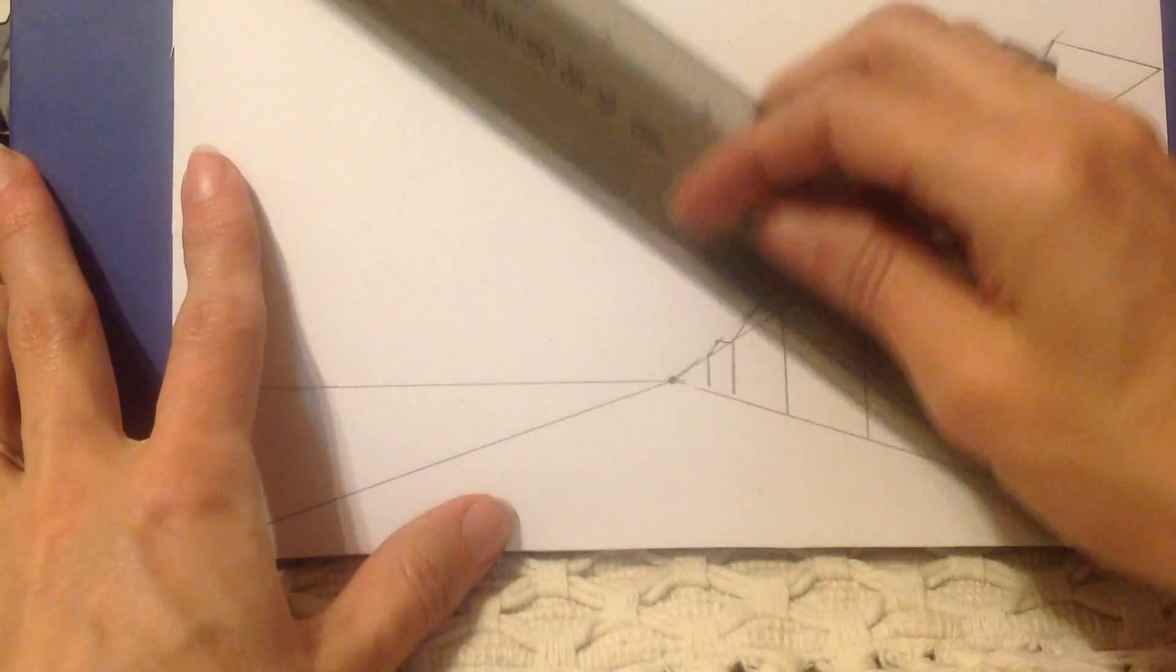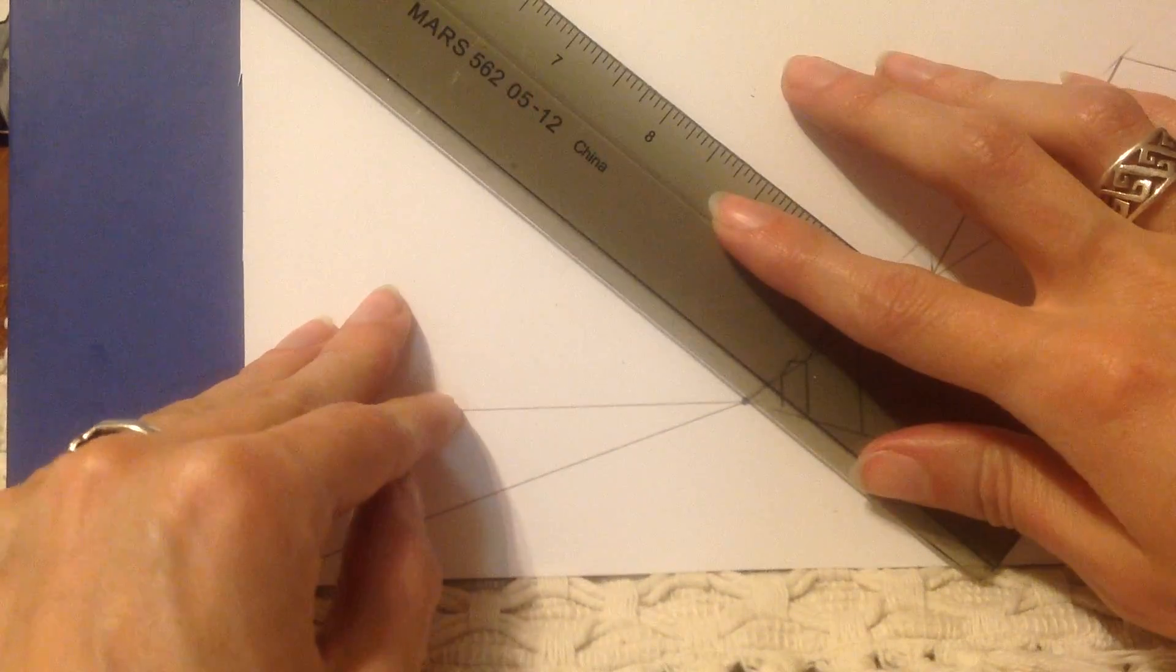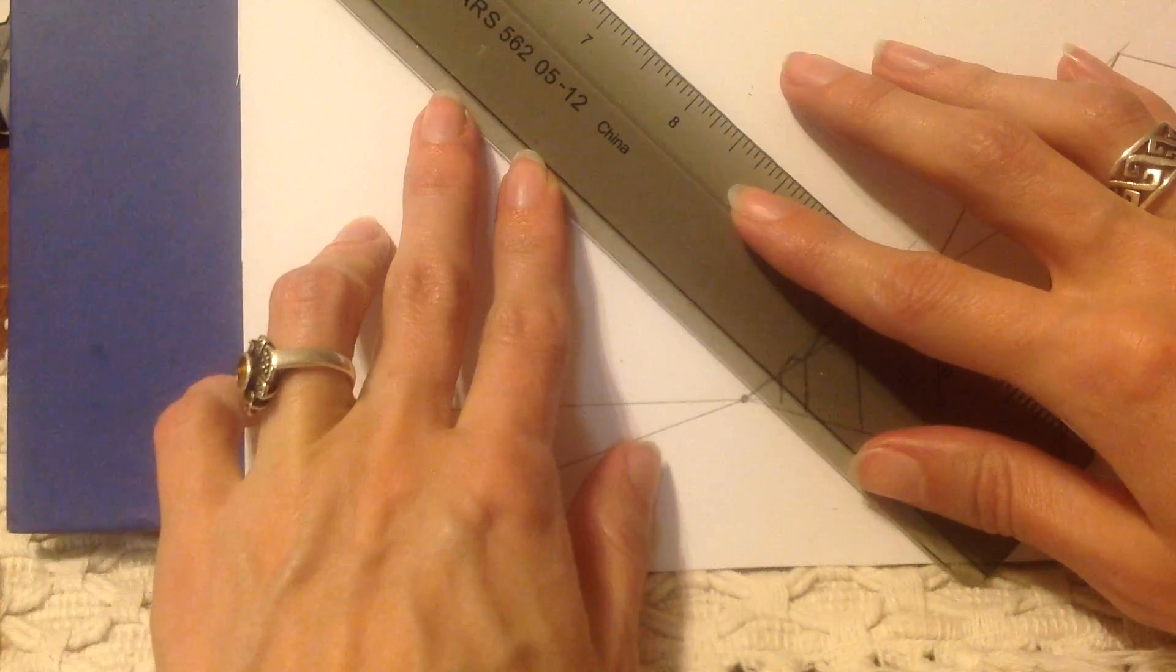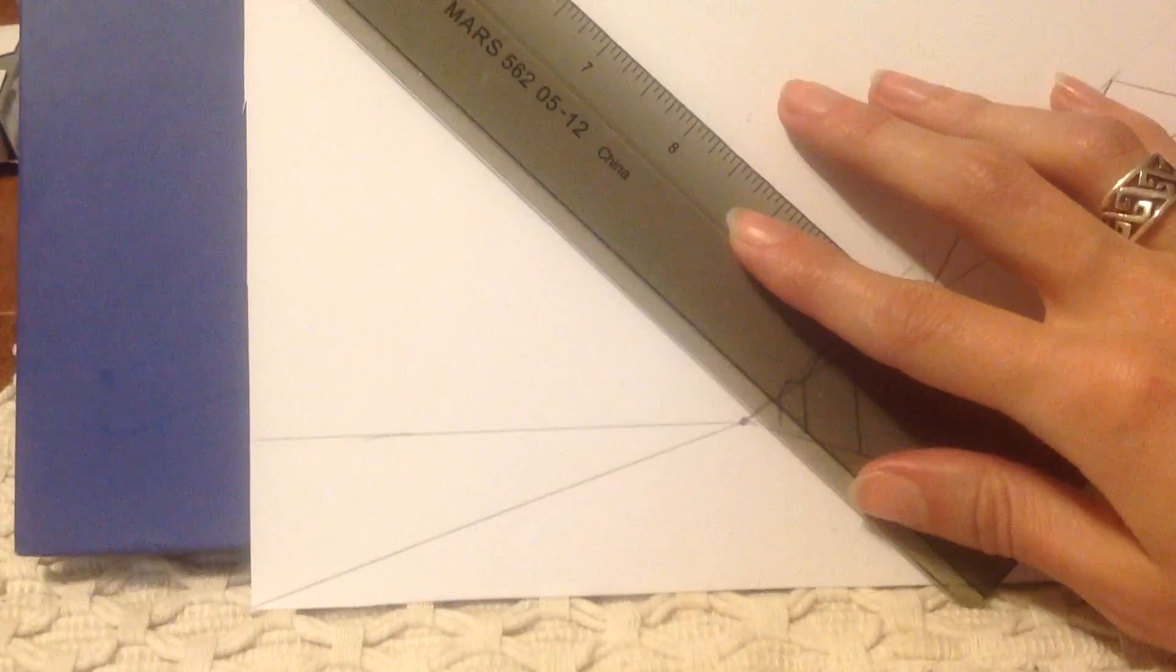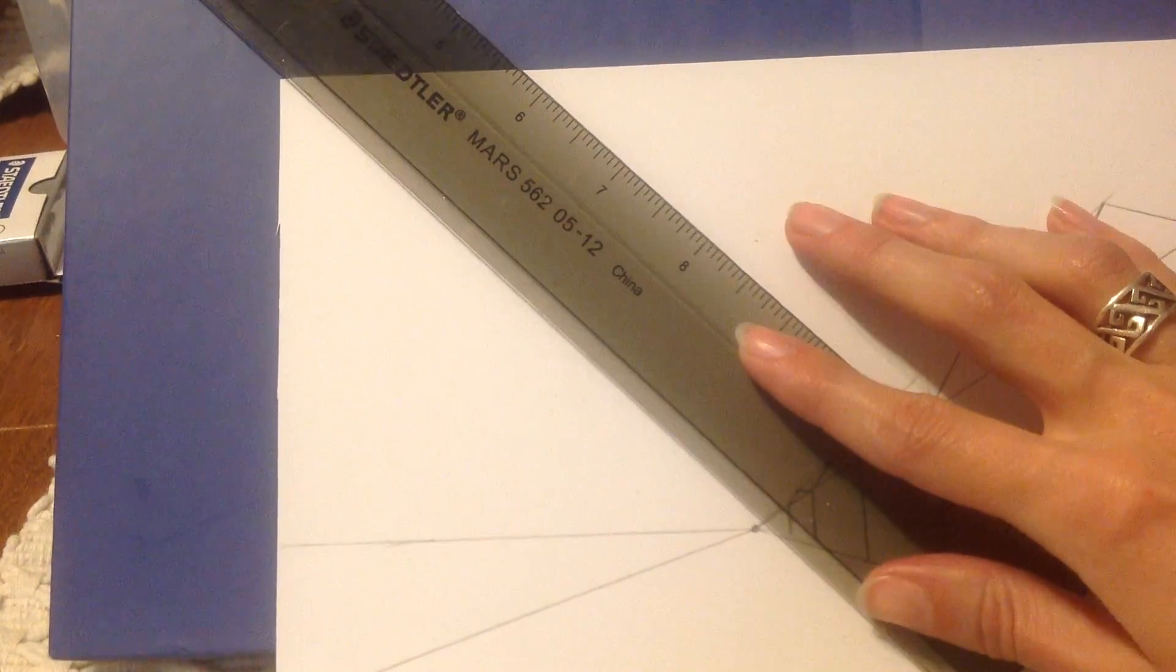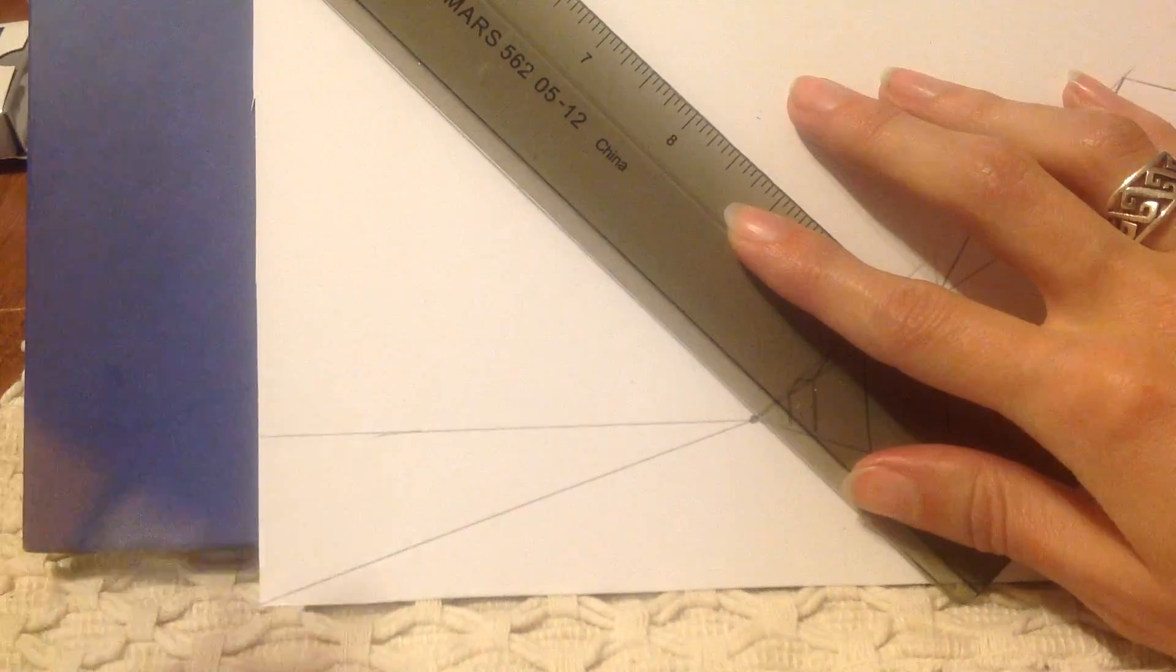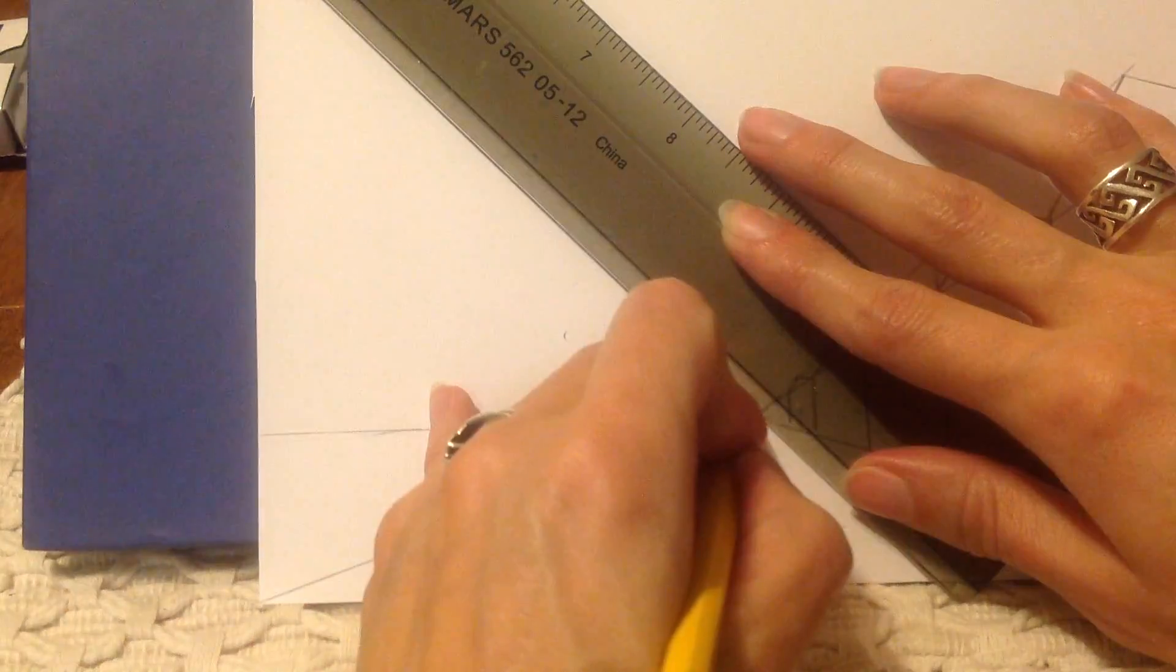I take my ruler, match it up with my vanishing point, and make that angle go way up, all the way up to the top corner. That's so you can see there, I've got it matched up with my top corner and my vanishing point. And draw the line down to the vanishing point.